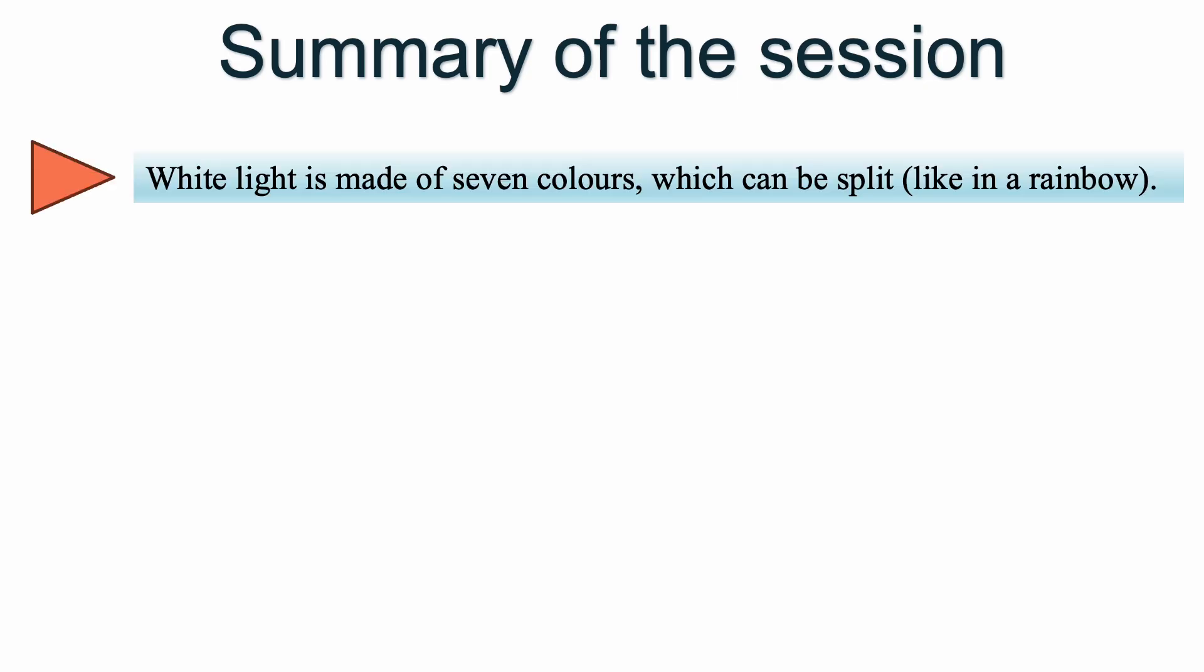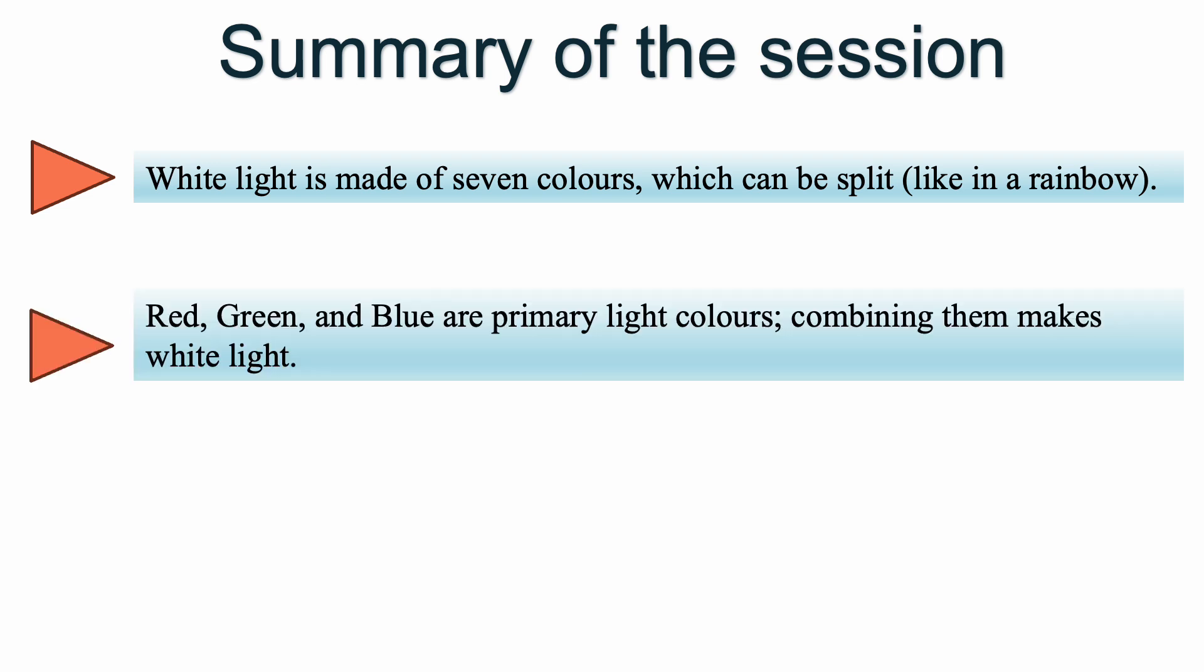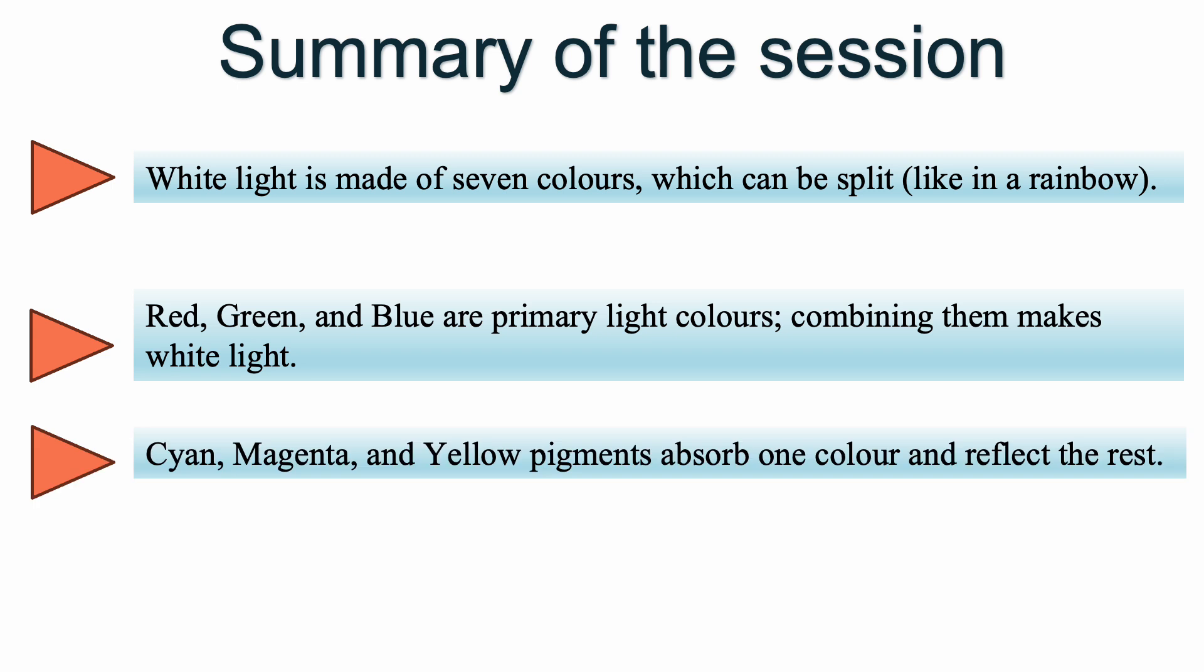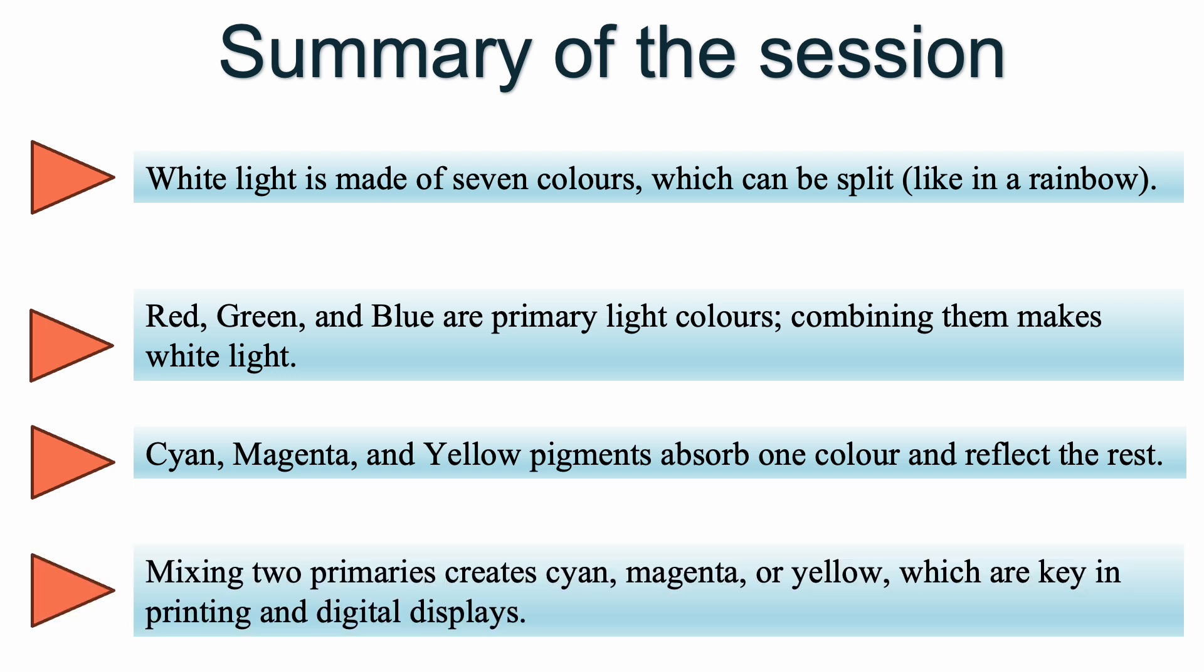Summary of the session. White light is made of seven colors which can be split like in a rainbow. Red, green and blue are primary light colors. Combining them makes white light. Cyan, magenta and yellow pigments absorb one color and reflect the rest. Mixing two primaries create cyan, magenta or yellow, which are key in printing and digital displays.